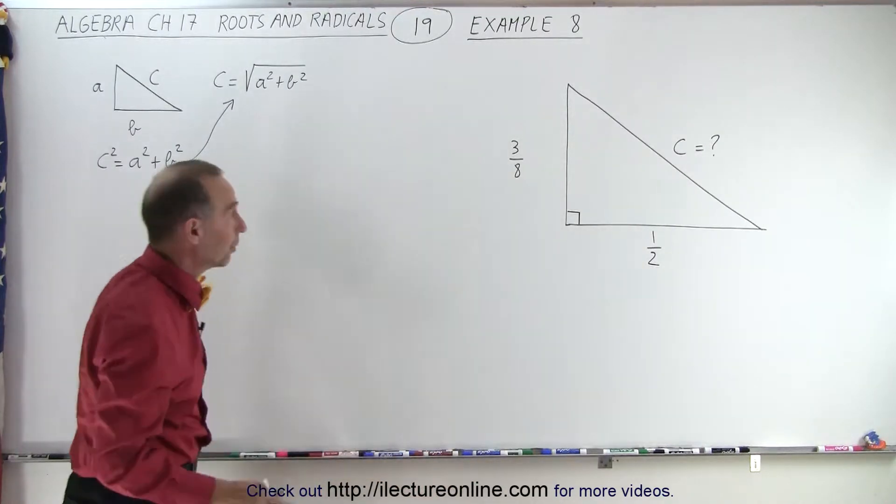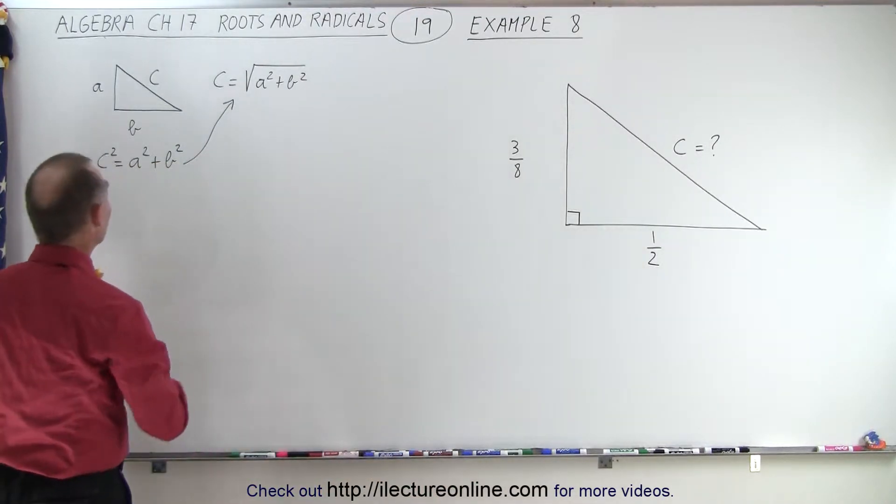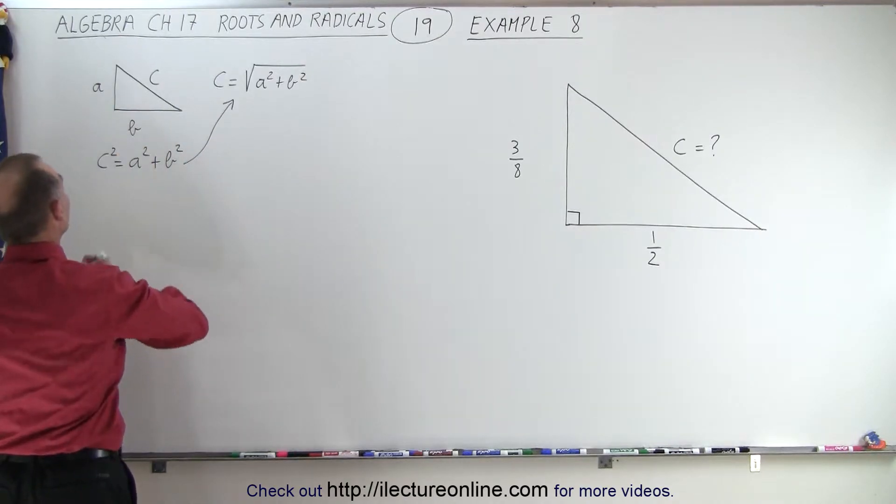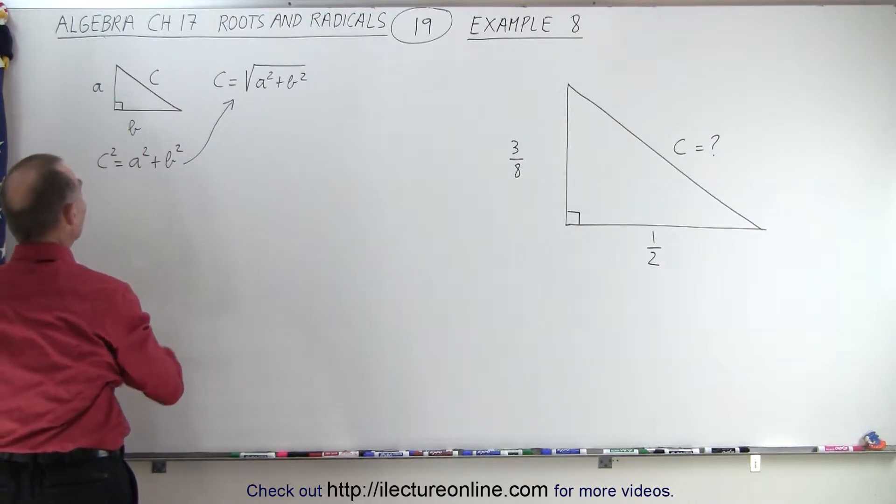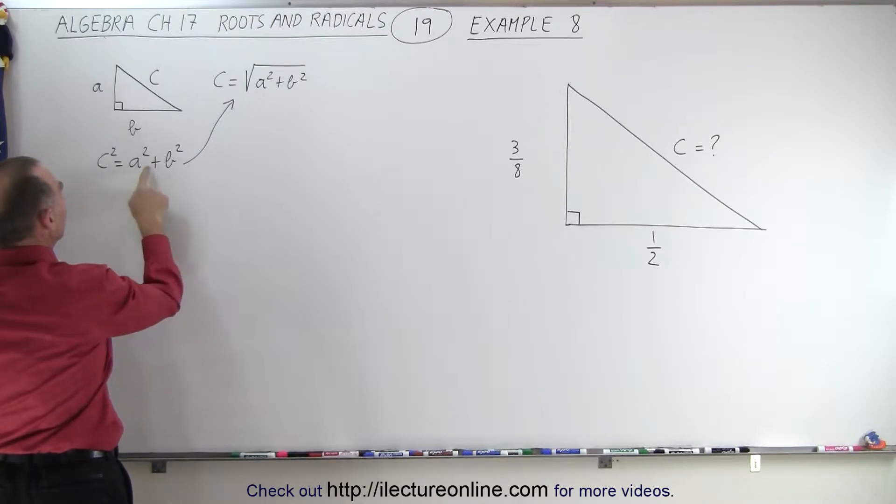Of course, we have to remember that the Pythagorean Theorem says that if we have a right triangle, if this is a right angle right there, that means the hypotenuse squared equals the sum of the square of the two legs.